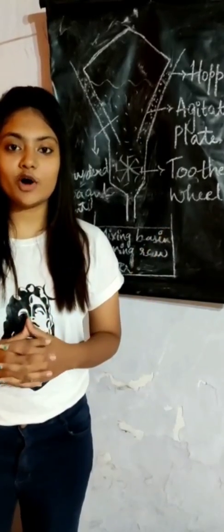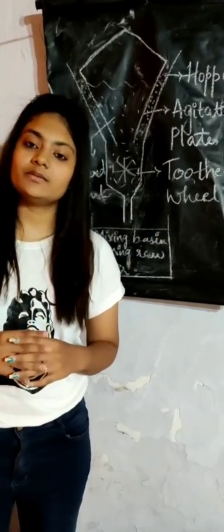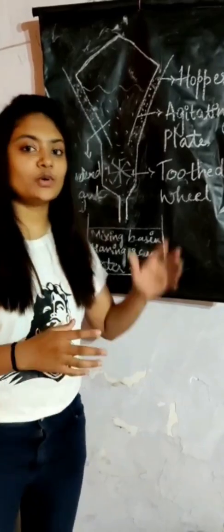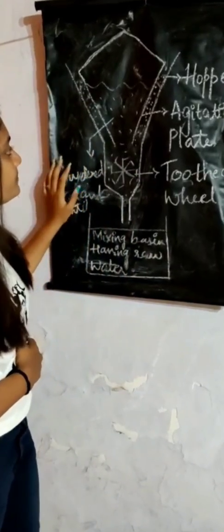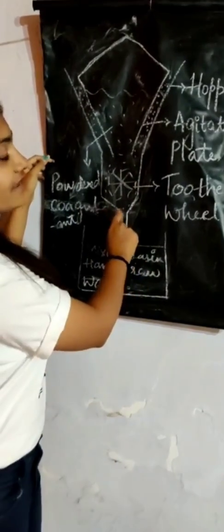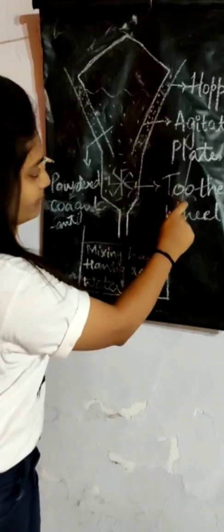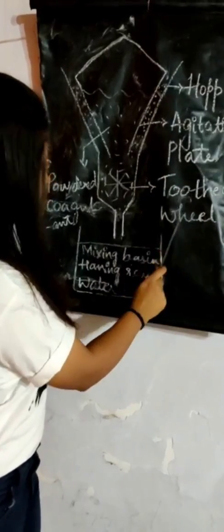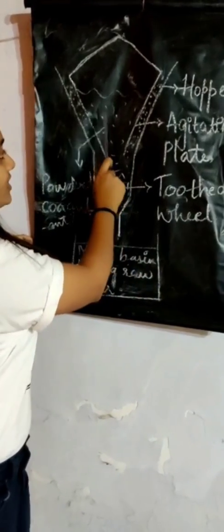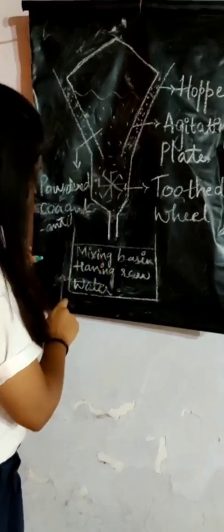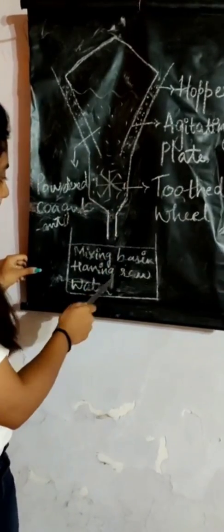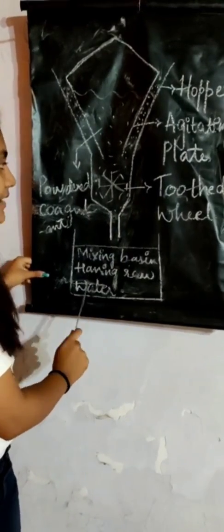So coming back to my topic that is dry feeding device, I will show you the diagram of dry feeding device. Basically it is in the form of a tank having hopper bottom. This device has got agitating flakes and toothed wheel, powdered coagulant which has been added, and at last this is a mixing basin having raw water.